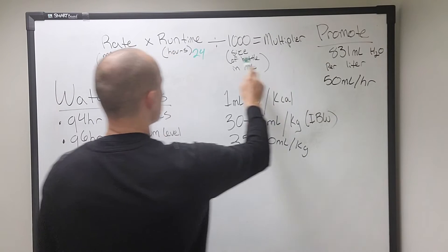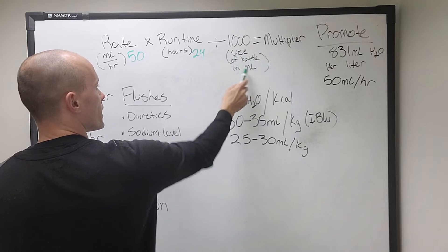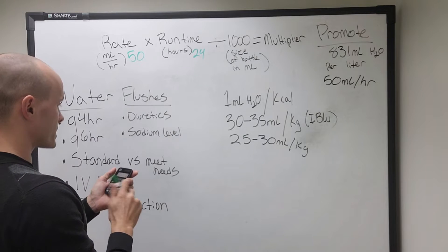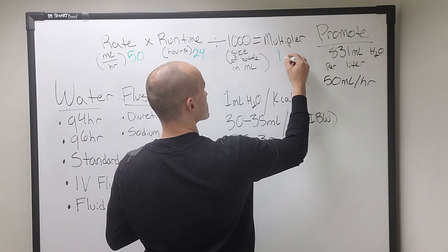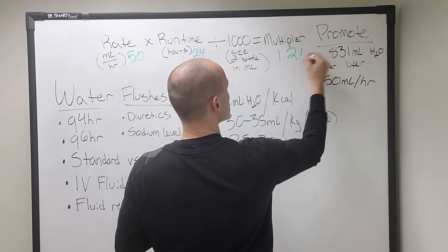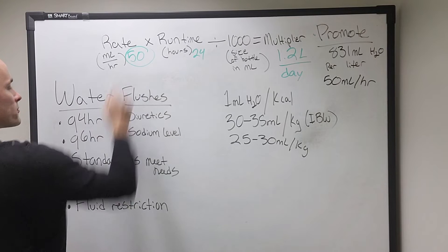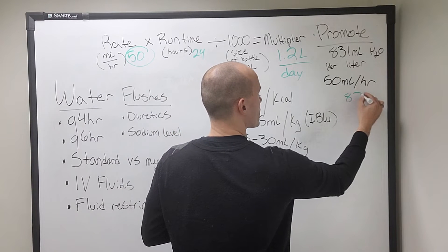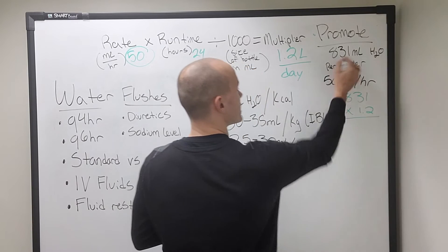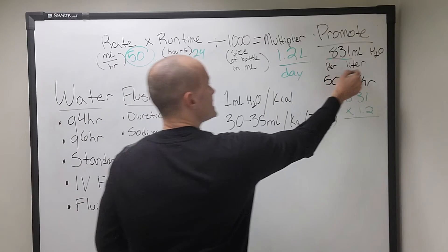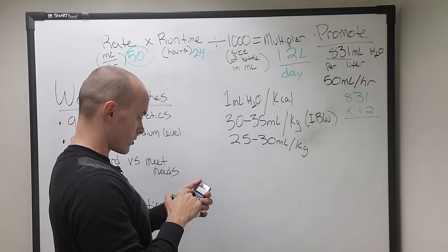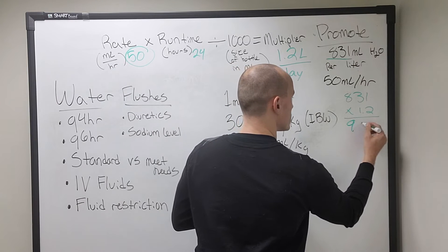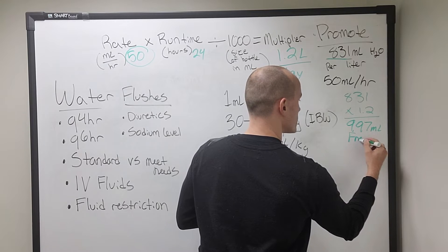Your formulary will tell you per liter or whatever bottle size how much water is in that formula. So whatever size bottle that formula is in, that's what you divide from here. So this says size of bottle in milliliters. So we do 50 times 24 is 1200 divided by 1000 gives you 1.2. So this person will receive 1.2 liters per day of promote if it's running at 50 an hour. So we take that 1.2 and we multiply our water by 1.2 because there's 831 milliliters of water per liter of formula and they're getting 1.2 liters per day. So 831 times 1.2 gives you 997.